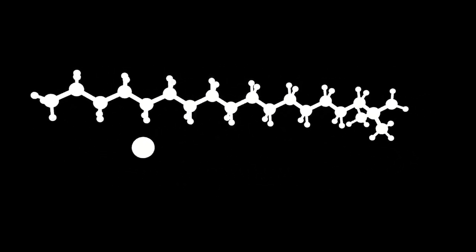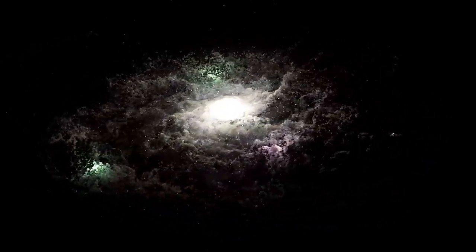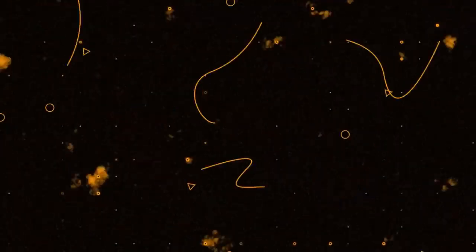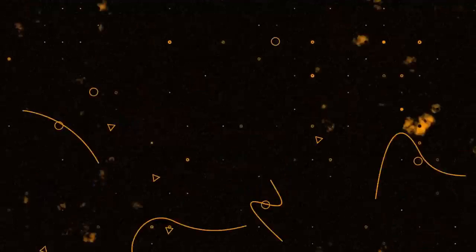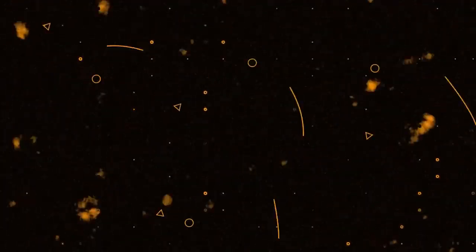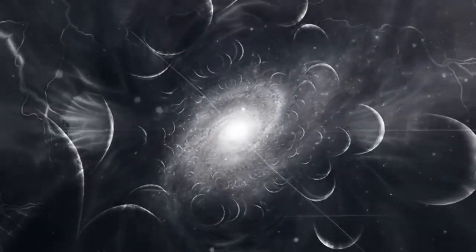Another game-changing revelation came not from what black holes emit, but from what may invisibly surround them. In a pioneering study by the Education University of Hong Kong, astronomers discovered the first indirect evidence that black holes might be cloaked in dark matter, the elusive substance thought to make up roughly 85% of the universe's total mass.